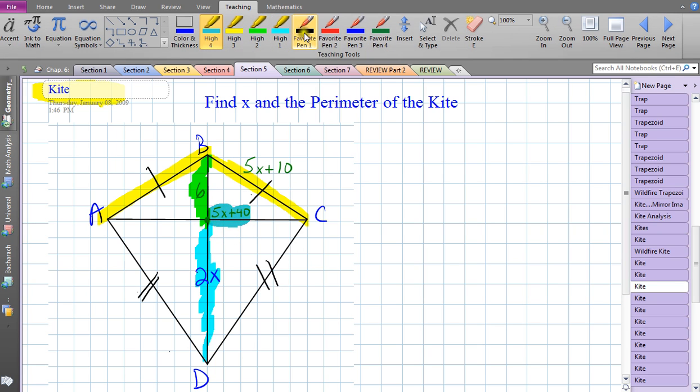It looks like this side is 5x plus 10. Looking at the instructions, we want to find x and the perimeter of this kite. We need to know how to set up an equation to solve for x. I do see an axis of symmetry for this kite, but I can't say that 6 is equal to 2x - that's not going to work.